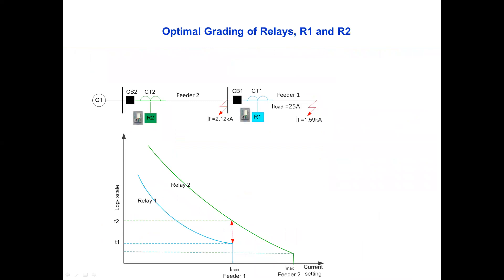In this page, how do we achieve optimal gradient of Relay 1 and Relay 2? Say we have two faults now, fault at Feeder 2 and fault at Feeder 1. Now, we're not discussing faults at Feeder 1. We need to determine Relay 2 setting for local fault on Feeder 2.